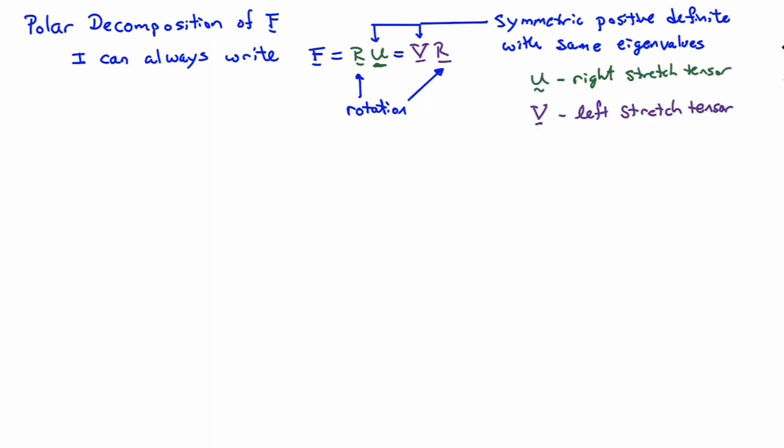They have names also. U is called the right stretch tensor, and V is called the left stretch tensor. So sometimes we call RU the right polar decomposition, and VR the left polar decomposition.